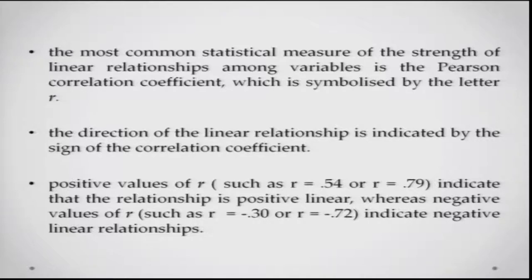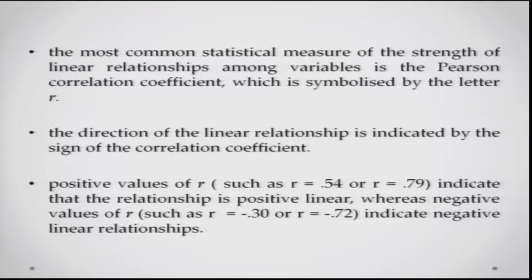The most common statistical measure of the strength of linear relationships is the Pearson's correlation coefficient, symbolized by R. The direction of the linear relationship is indicated by the sign of R — a plus sign indicates a positive linear relationship, and a negative sign indicates a negative relationship. The magnitude, such as R = 0.54 or R = 0.79, tells you how strong that relationship is. For example, R = +0.80 represents a very strong positive linear relationship, while R = −0.20 represents a very weak but negative relationship.